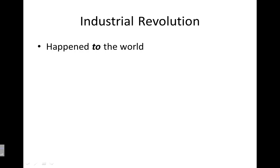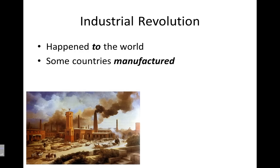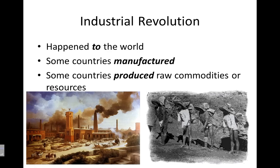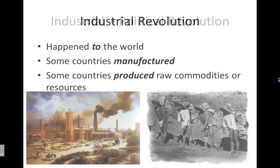The Industrial Revolution really happened to the world. Some countries manufactured things, and some countries produced the commodities or resources used to manufacture. Countries didn't have much of a choice — they couldn't say they weren't going to take part. It really happened to the world.